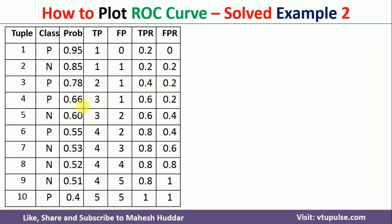Let us take the example with threshold 0.55. This example is classified as positive as well, and all examples with probability greater than 0.55 have already been classified as positive. Since this new example is a true positive, TP increments to 4 and FP remains the same. This same process is repeated for all different thresholds, and finally you will get TPR = 1 and FPR = 1.